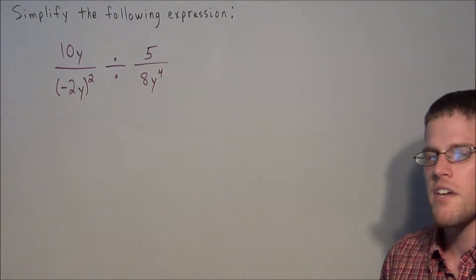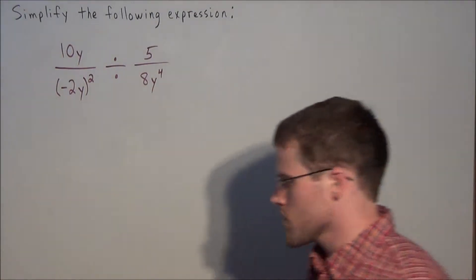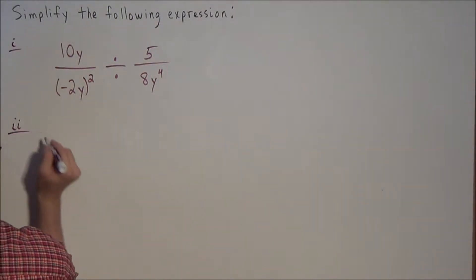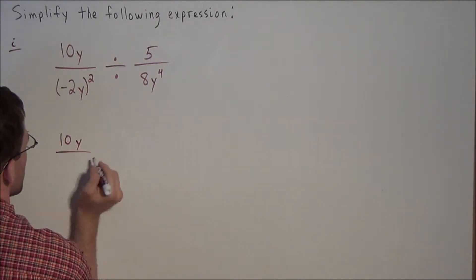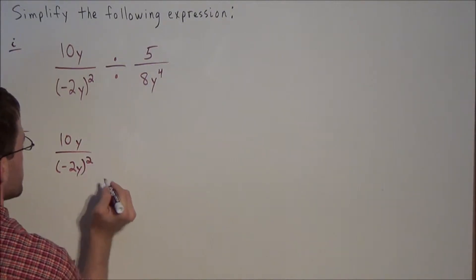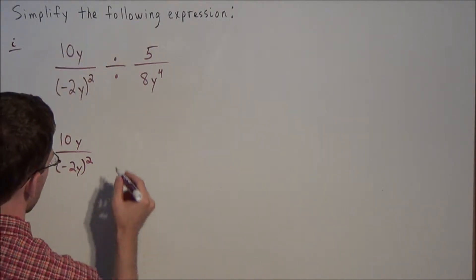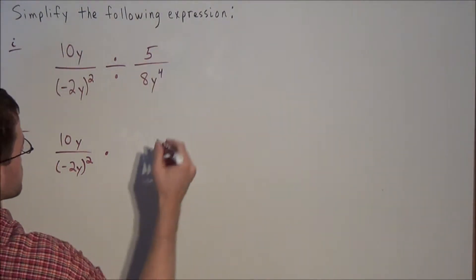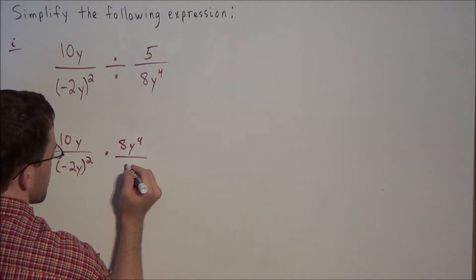For this problem, let's make use of the keep-change-flip technique for dividing fractions — that is line one. For line two, we rewrite this as 10y over negative 2y squared, then change the operation to multiplication and flip the second fraction to 8y to the 4th over 5.